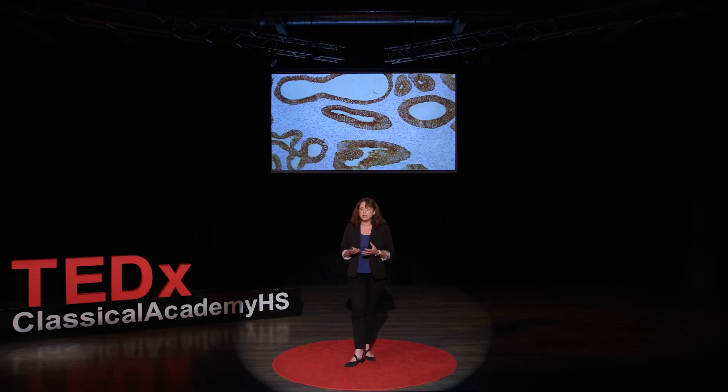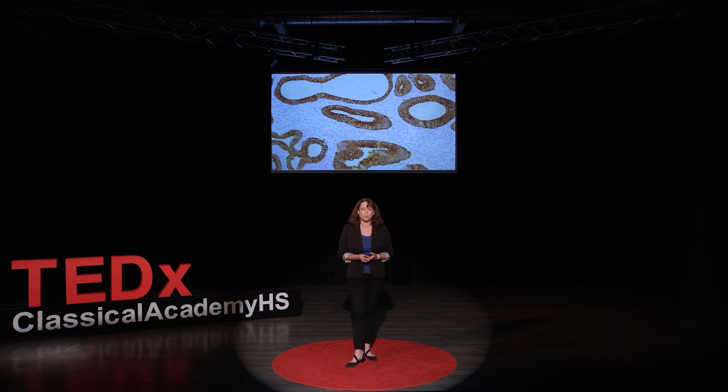Pathologists can use additional techniques to get more clues into what's happening in the disease. For example, this image has been stained with antibodies for a particular protein using a technique called immunohistochemistry. Doctors can also use molecular tests and genomic testing. But these kinds of tests are expensive and time-consuming and often don't have all the answers.